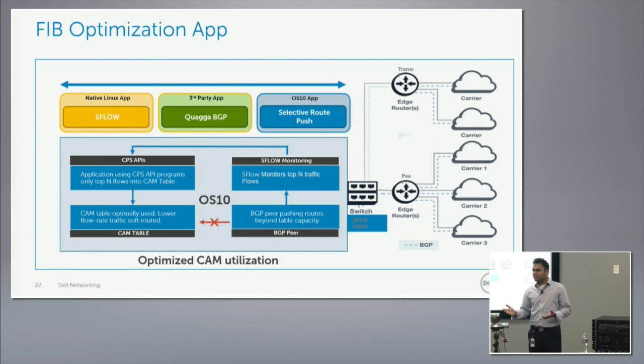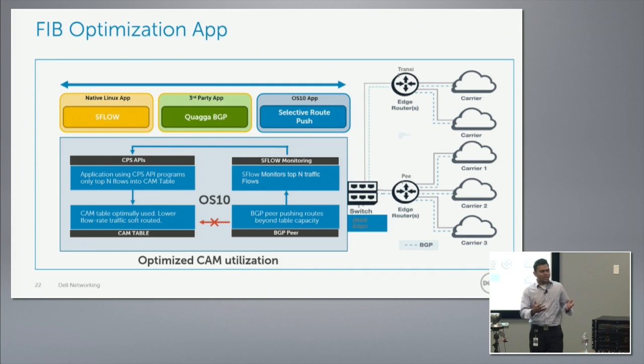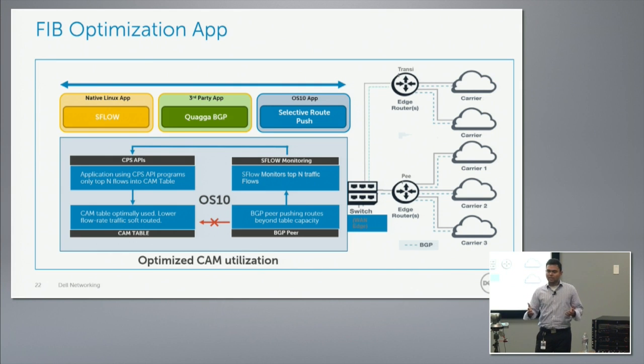Typically, these WAN edge routers are large routers. So how can we replace these WAN edge routers with a top-of-the-rack switch like the Dell S6000 running OS 10?